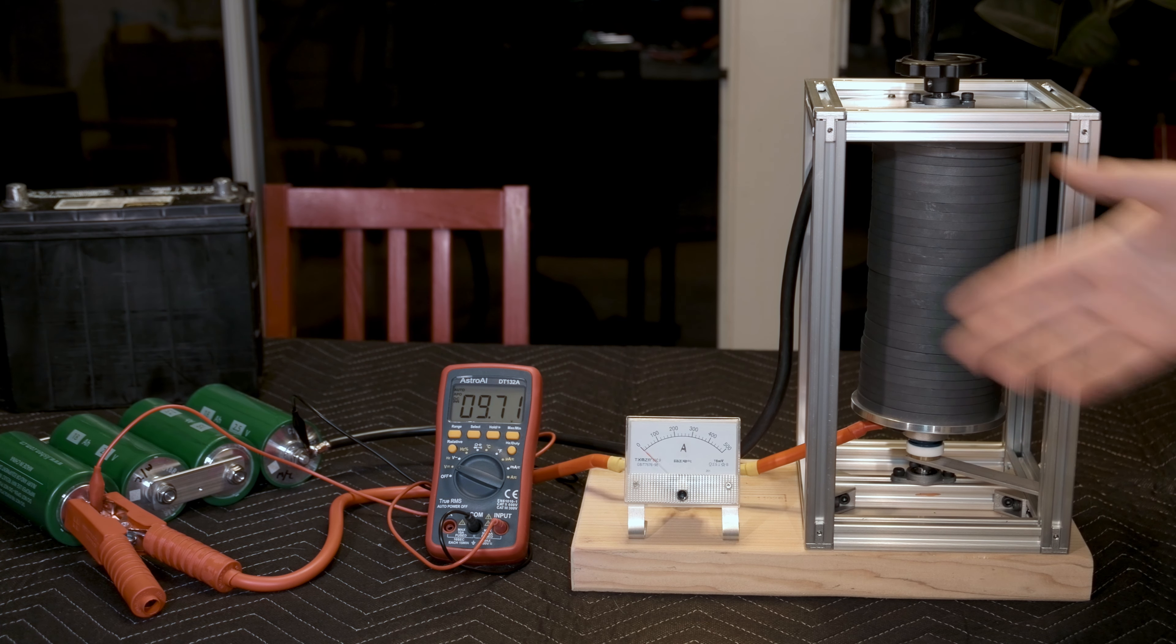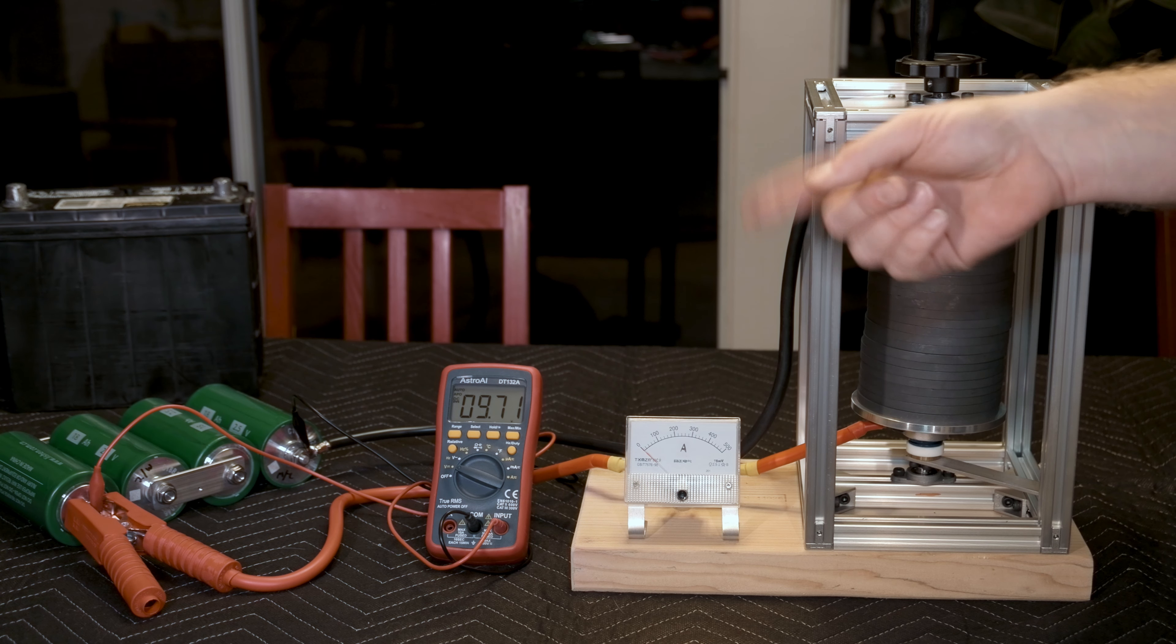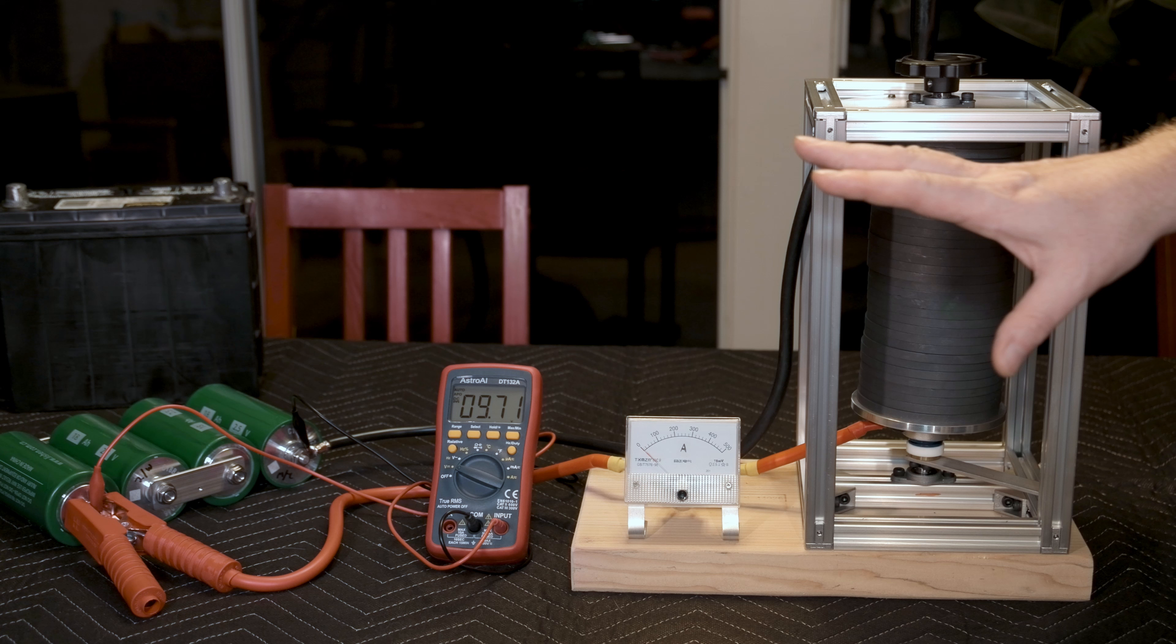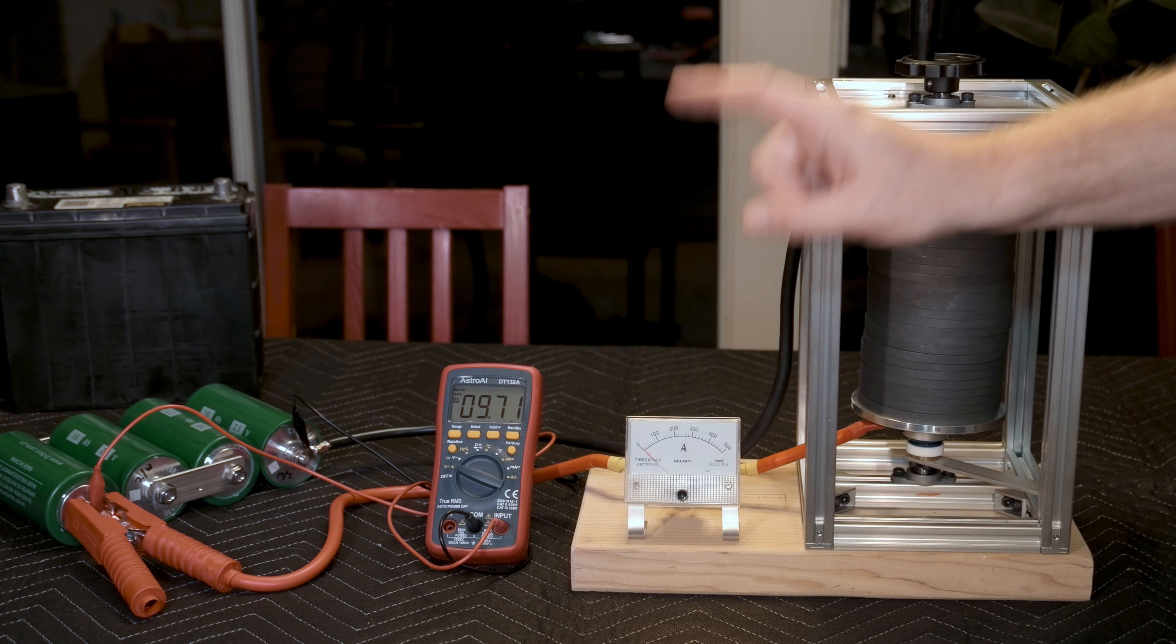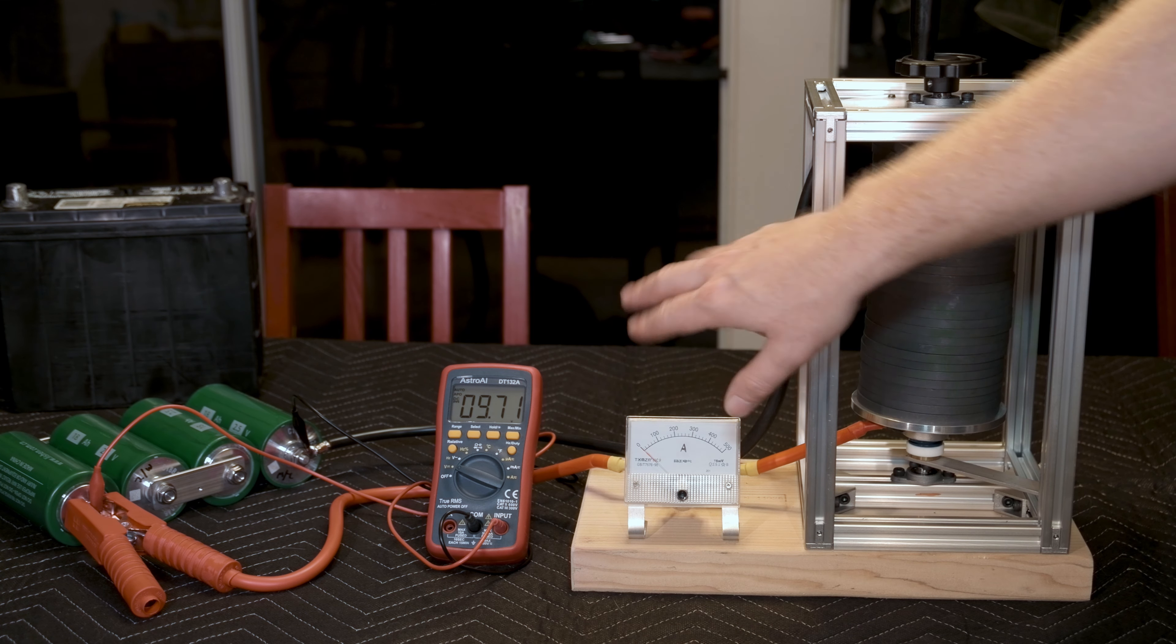The lead screw itself is insulated with three layers of high temperature fiberglass sleeving so the stack doesn't short out on it. And that's basically how it works. So we saw maybe a volt drop on our test with the lithium cells. Let's see how a car battery works.